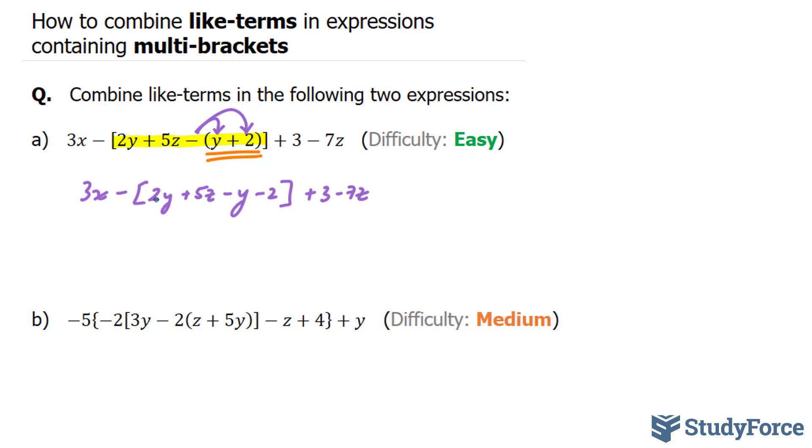Now these two y's can be combined. If you combine them correctly, you should end up with 3x minus simply y plus 5z minus 2 plus 3 minus 7z.